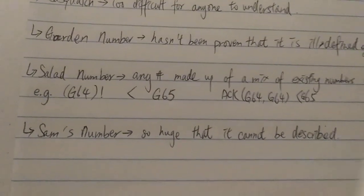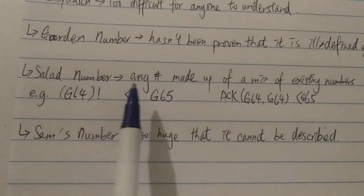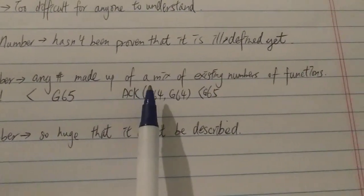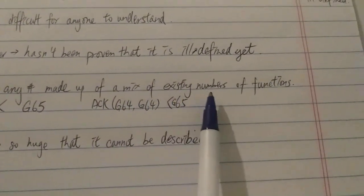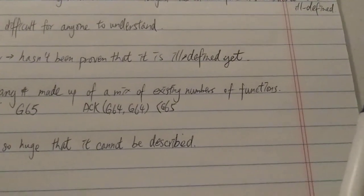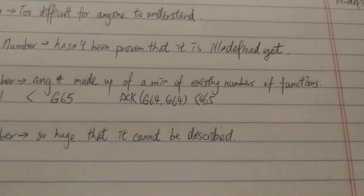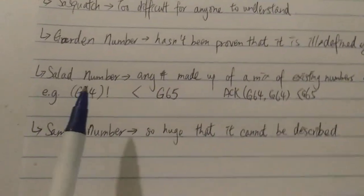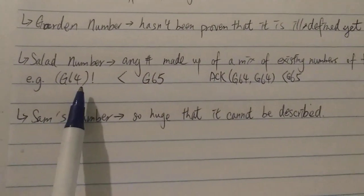I'm going to quickly talk about the Salad Number. Salad Number is actually any number made up of a mix of existing numbers or functions, usually made up or created by inexperienced people. One example would be Graham's Number Factorial.